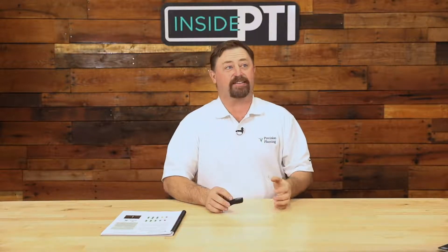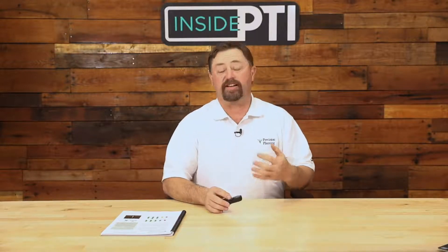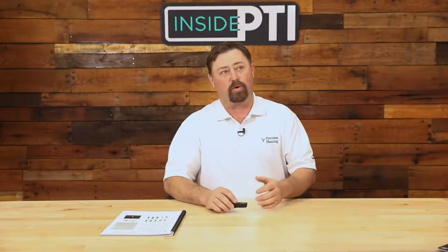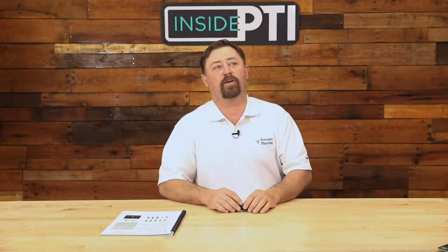Potassium is one of the essential nutrients that we have to apply for our crops every year. Potassium is classified as a macronutrient, just as nitrogen and phosphorus are. Plants are going to take up potassium in its ionic form of K+.